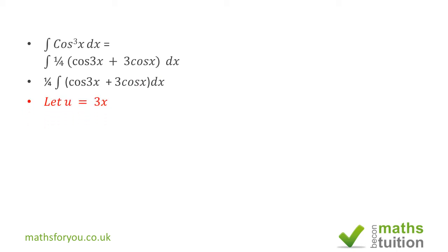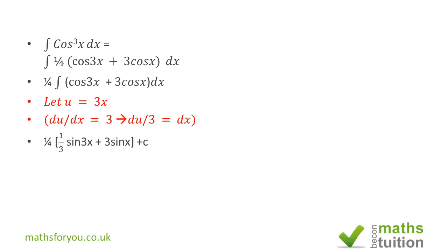For the cos(3x) term, we let u equal 3x. Then du/dx is 3, so dx equals du over 3. In effect, we replace cos(3x) with cos(u). When you integrate cos(u) you get sin(u), and u is 3x, and of course you get the 1 over 3 from there. When you integrate 3cos(x) you get 3sin(x). Do not forget your integration constant.